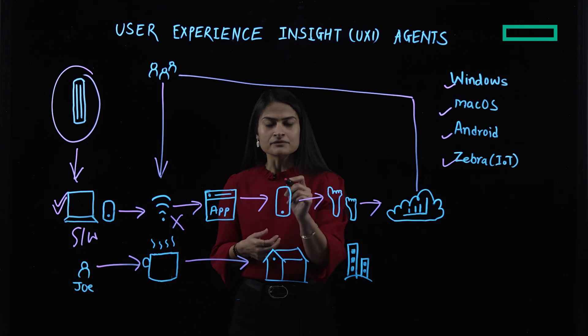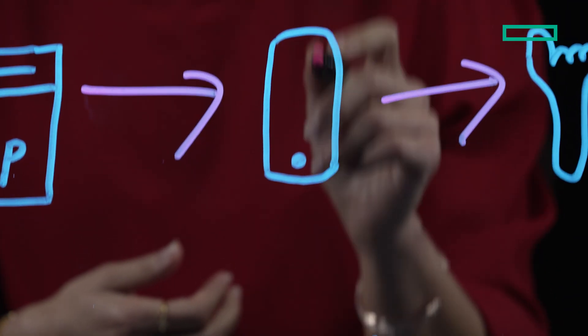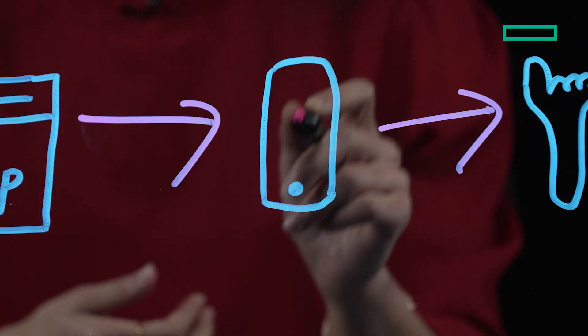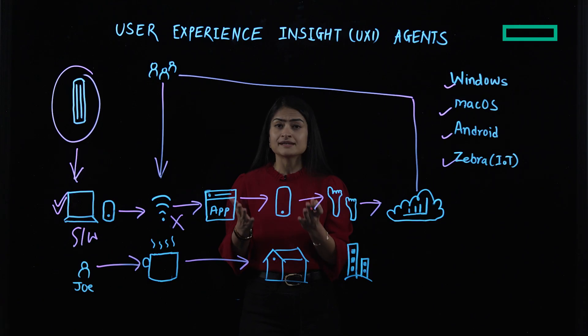But when we checked the device health, Joe had a really high CPU utilization on his device. So we asked Joe to either kill some apps or good old restart his device.